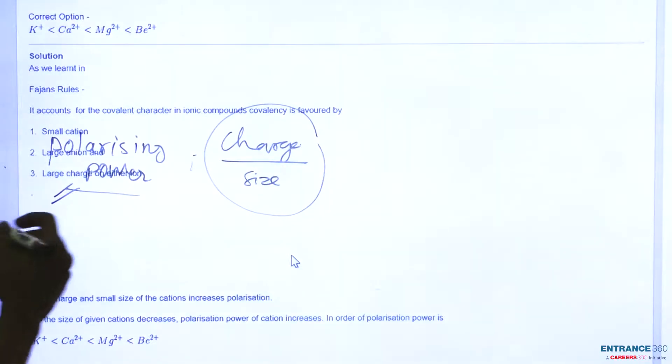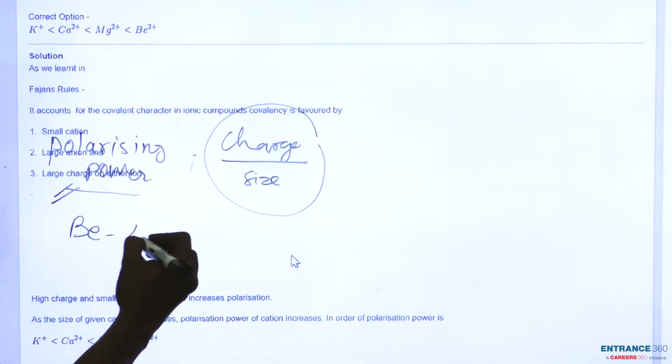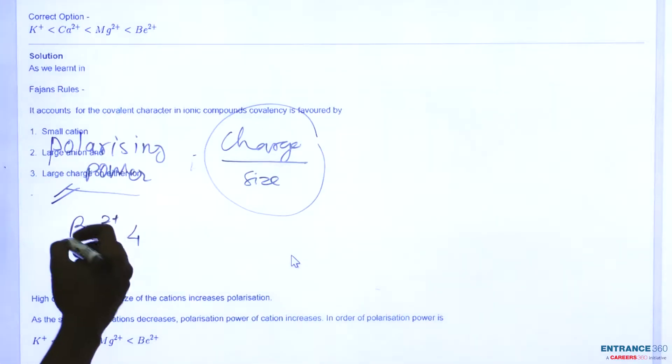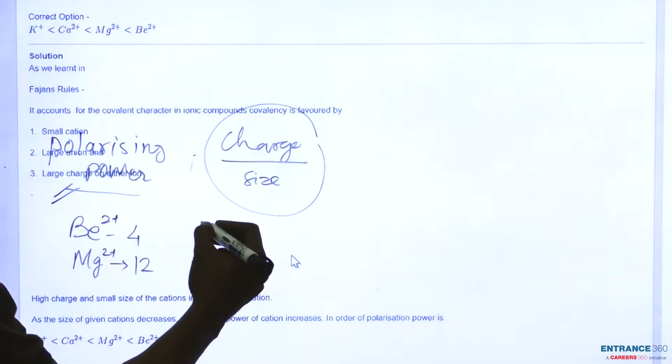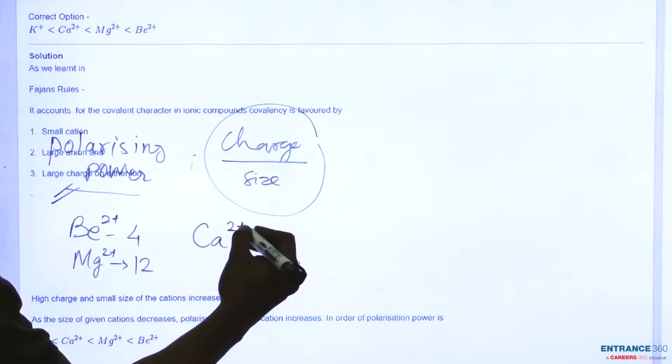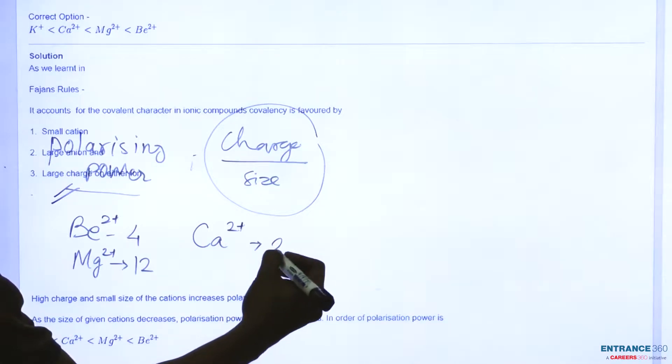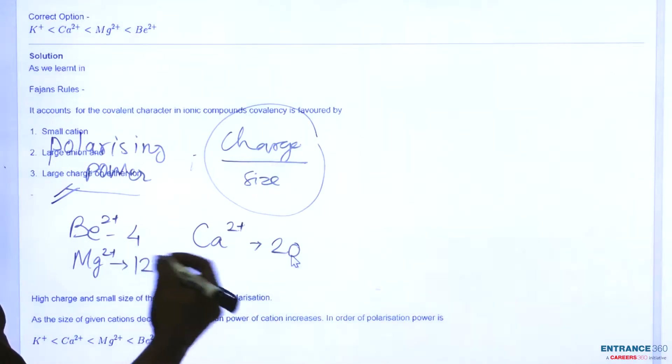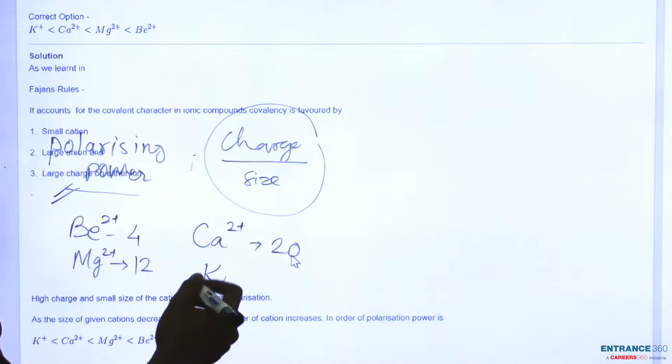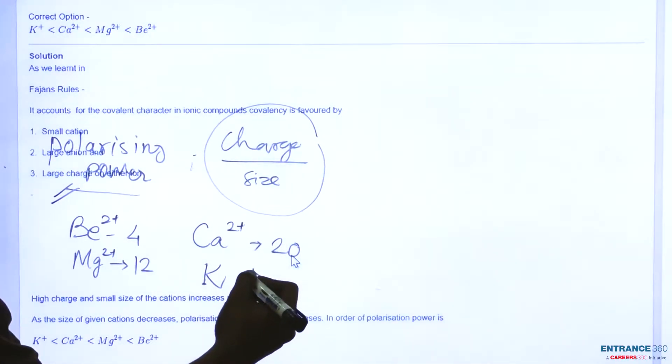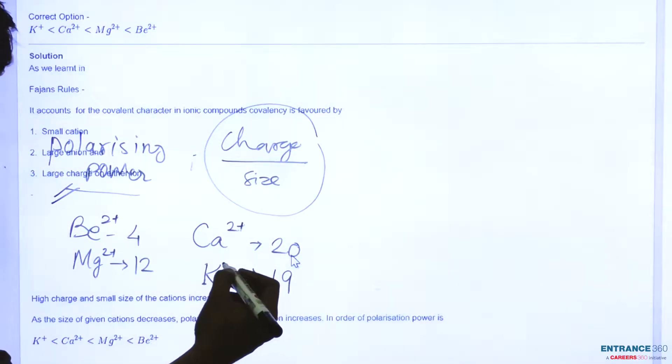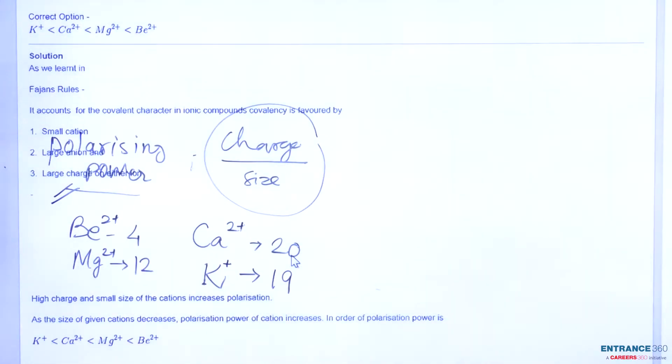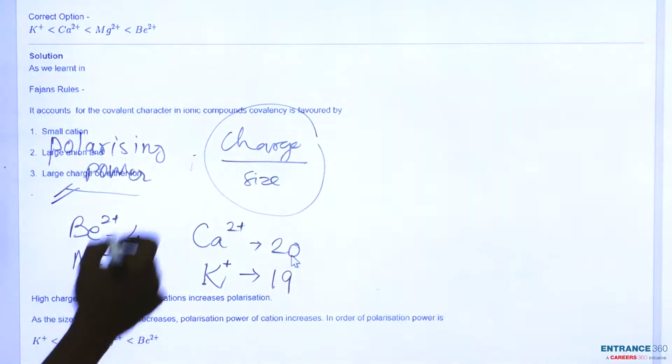Let's say for the beryllium ion which has atomic number only 4, it has 2+ charge. Also for magnesium ion, it has atomic number 12 and given charge is 2+. For calcium we have given 2+ charge and it has atomic number 20. And for the potassium, this will have only 19, and the charge on this atom is only 1. So now we will find its charge by size ratio.